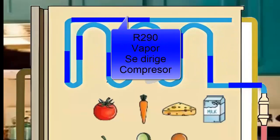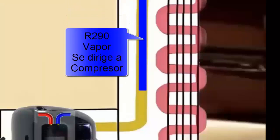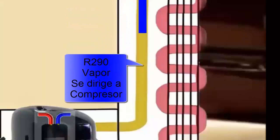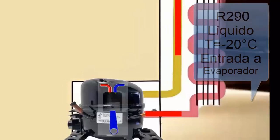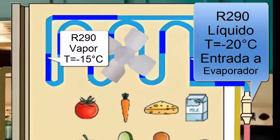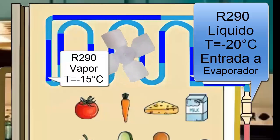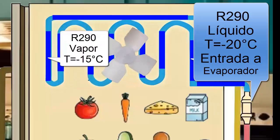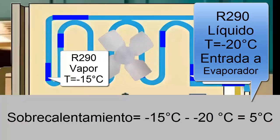For this case, let's assume that the temperature of the R290 refrigerant in a gaseous state, at the evaporator's exit, is minus 15 degrees Celsius. This means that the R290 refrigerant changes from minus 20 degrees Celsius to minus 15 degrees Celsius, resulting in a superheating of 5 degrees Celsius in this equipment.